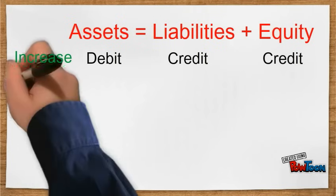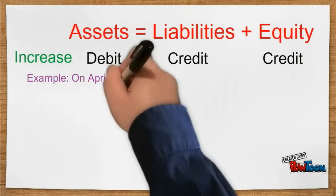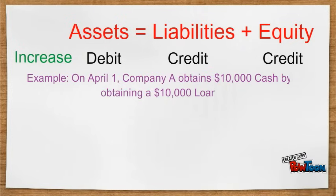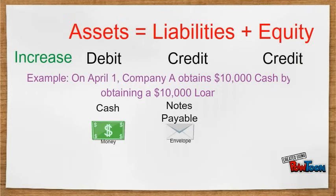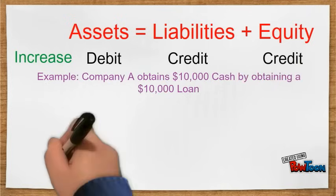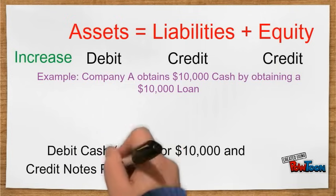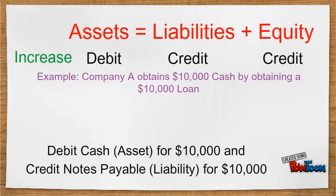For example, on April 1st, Company A obtains $10,000 cash by obtaining a loan. Since the company's cash balance increased by $10,000, we would debit cash, which is an asset account. In order to obtain that loan, the company increased its liabilities by $10,000. Therefore, we would credit notes payable.